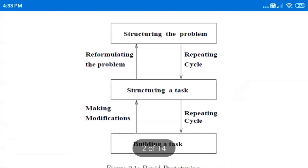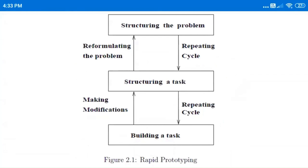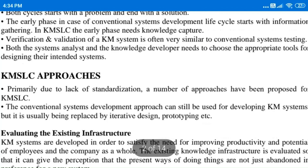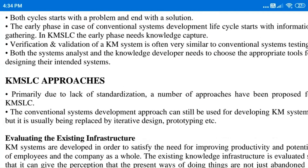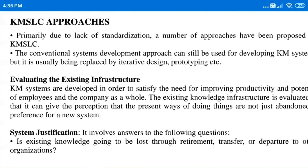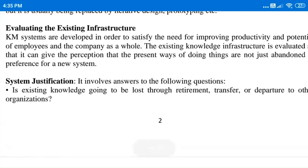This is the block diagram of rapid prototyping in which first a problem is structured. When that task is performed it may not be good enough in structuring, so the problem can be restructured so that it is convenient, then the task is built up, and if modification is required that is taken into account. Regarding similarities between the conventional system and KMSLC: both start with a problem and end with a solution, the tools used for verification are the same, and both the system analyst and knowledge developer need to choose appropriate tools for solving the problem.